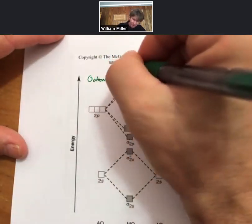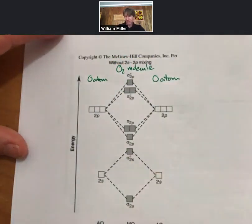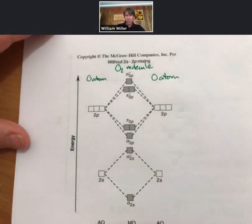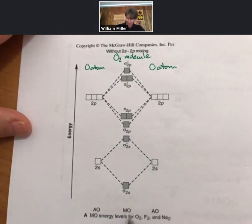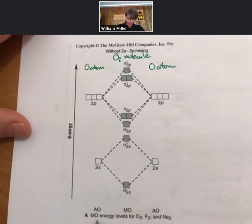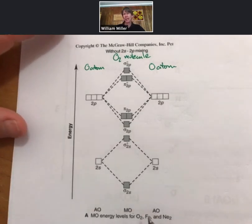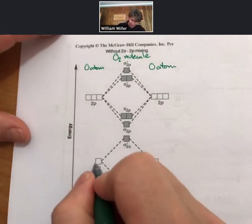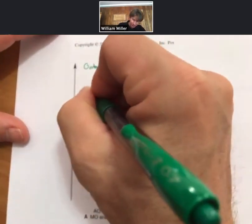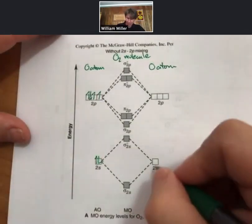We haven't drawn the 1s's because 1s's are core electrons and will not participate in bonding. We're starting with the 2s. On the left there will be an oxygen atom, on the right there will be an oxygen atom, and in the middle will be an O2 molecule with all of its molecular orbitals.